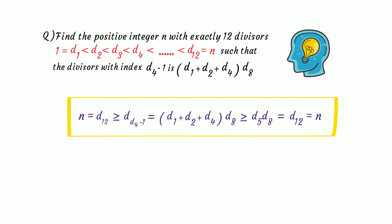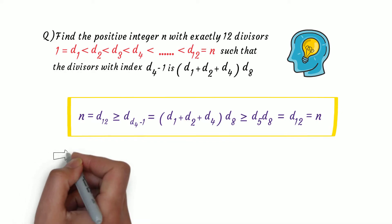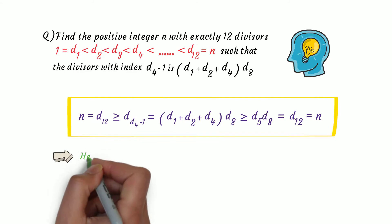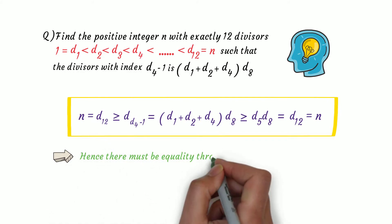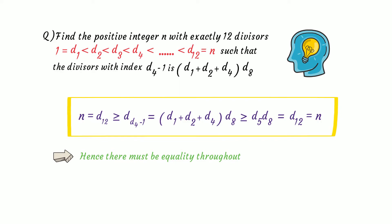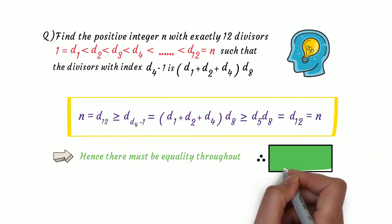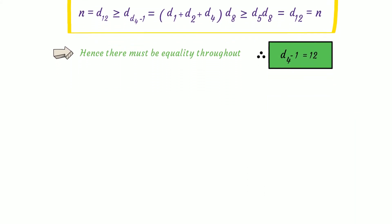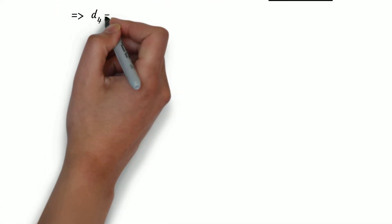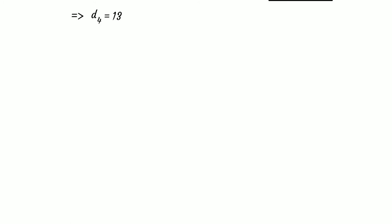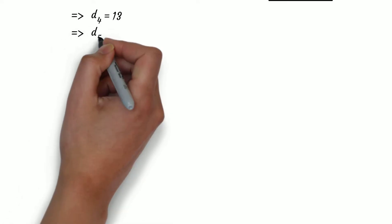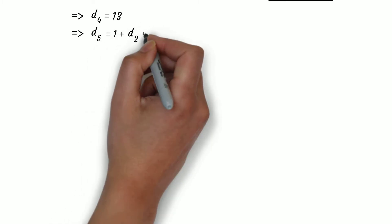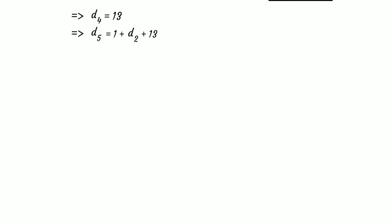Now notice this chain of equations: we started from n and ended at n. This is possible only when all inequalities become equalities — meaning d12 = d(d4 - 1) and (d1 + d2 + d4) = d5. From d(d4 - 1) = d12, we get d4 - 1 = 12, so d4 = 13. Since d1 + d2 + d4 = d5, we get d5 = 1 + 13 + d2 = 14 + d2.